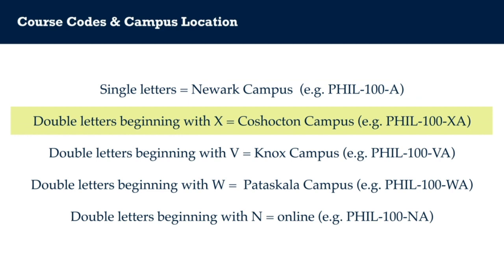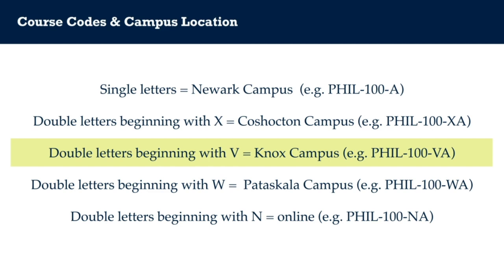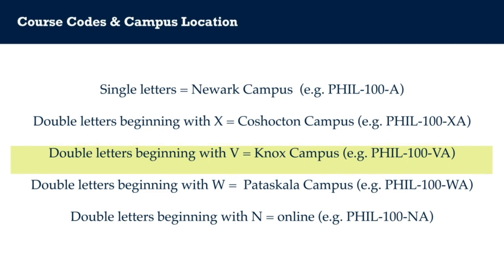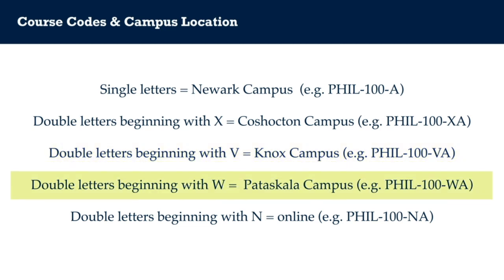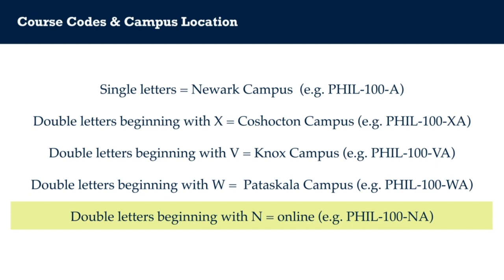Double letters beginning with X, such as XA, XB, etc., indicate the class will take place at the Coshocton campus. Double letters beginning with V, such as VA or VB, indicate that the course takes place on the Knox campus. Double letters beginning with W, such as WA or WB, indicate that the course is at the Pataskala campus. And finally, double letters beginning with N, like NA, NB, or NC, indicate that the course is offered exclusively online.